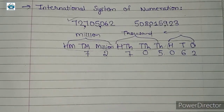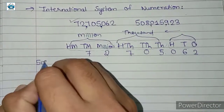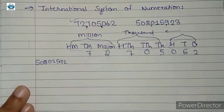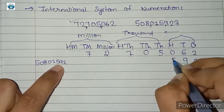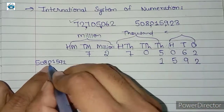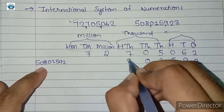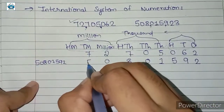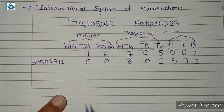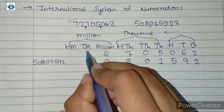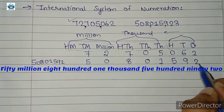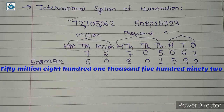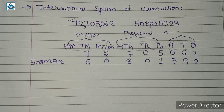Let us consider one more number: 50801592. We need to arrange this in the placement boxes. Two comes in ones, nine in tens, five in hundreds, one in thousands, zero in ten-thousands, eight in hundred-thousands, zero in millions, and five in ten-millions. So we read this as fifty million, eight hundred one thousand, five hundred ninety-two. This was according to the international system of numeration.